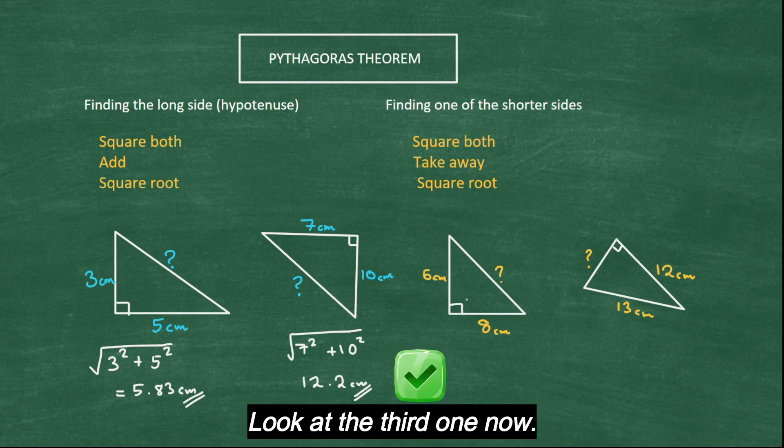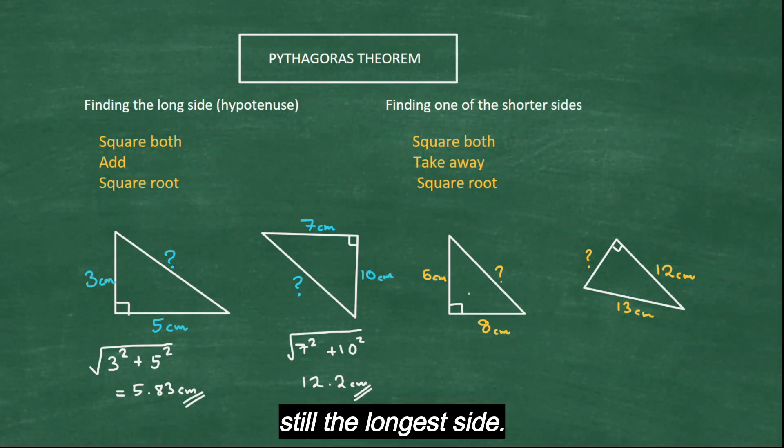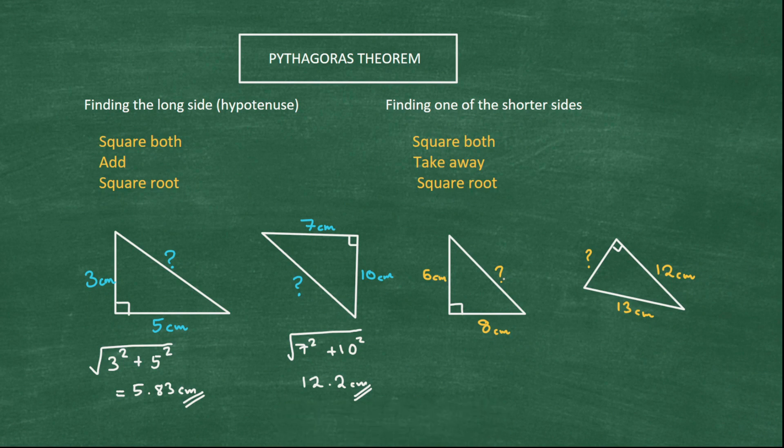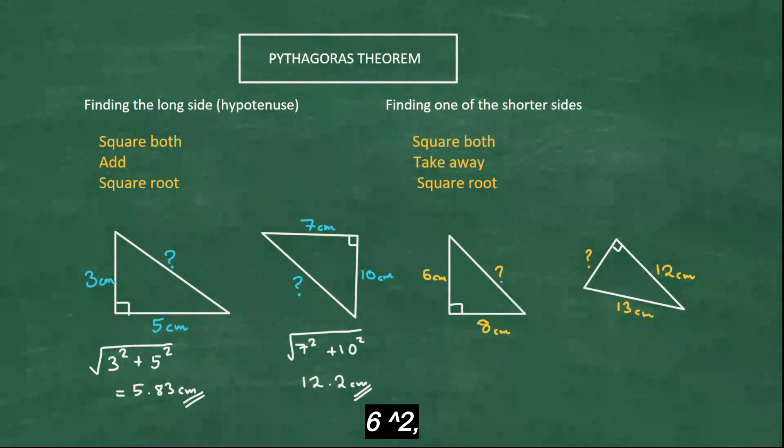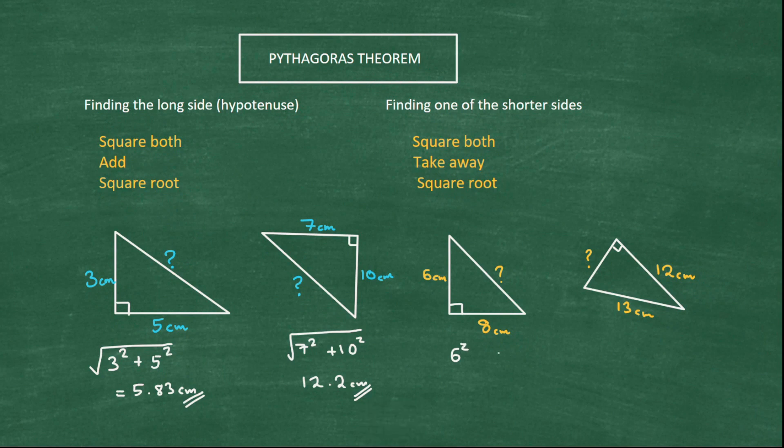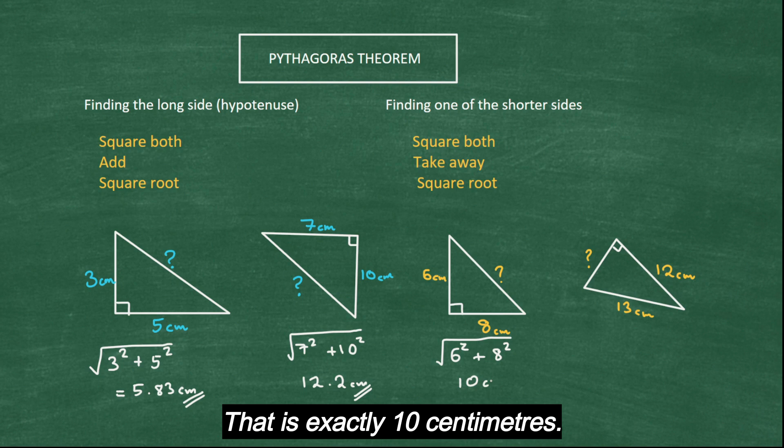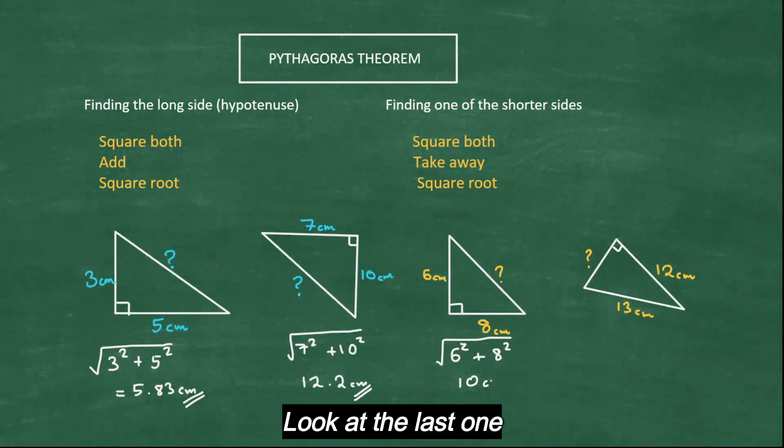Look at the third one. We are finding still the longer side. So what do we do? We just add them up. So square it, 6², 8², add and root it. That is exactly 10 centimeters.